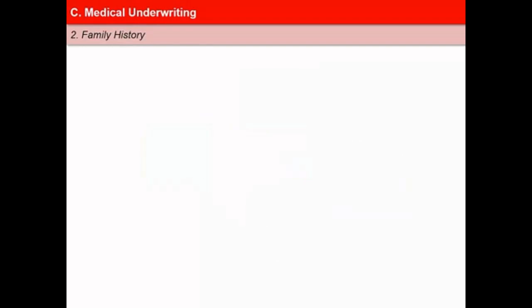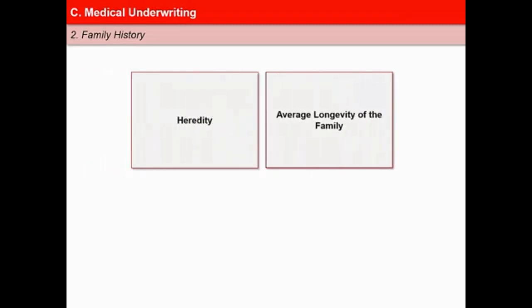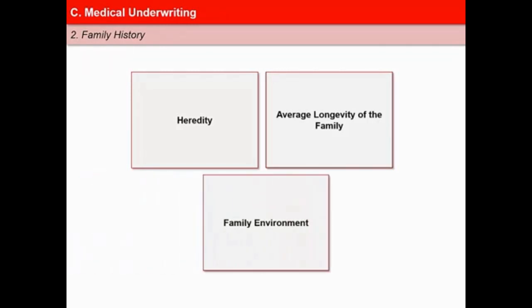The impact of family history on mortality risk has been studied from three angles. First is heredity — certain diseases that can be transmitted from one generation to another, say from parents to children. Second is average longevity of the family — cases where parents have died early on account of diseases like heart trouble or cancer, which becomes a pointer that the offspring may also not live long. And third is family environment — the environment in which the family lives, which may cause exposure to infection and other risks. Life insurers must be careful while entertaining cases of individuals with adverse family history and may impose an extra mortality rating.